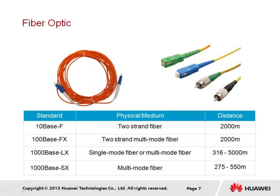Fiber optic is an increasingly popular media type that uses optical signals to carry transmissions between two endpoints. Optical signals have a lower rate of degradation than electrical signals, so optical medium supports transmission over much greater distances before attenuation becomes an issue. It also does not suffer from electrical interference from external sources. Its growing popularity is also due to its capability to support Gigabit Ethernet transmission rates of 10 or even 100 Gbps, with the potential for even greater rates.